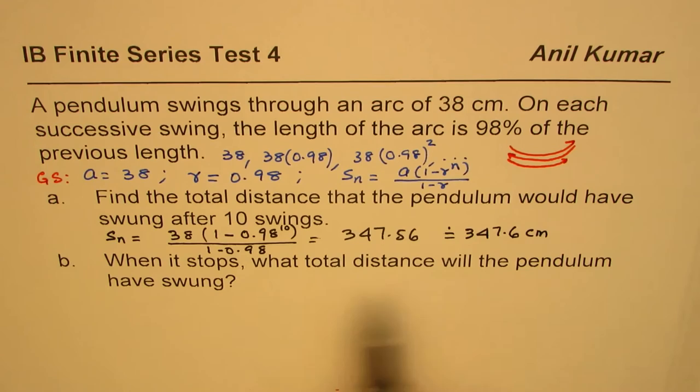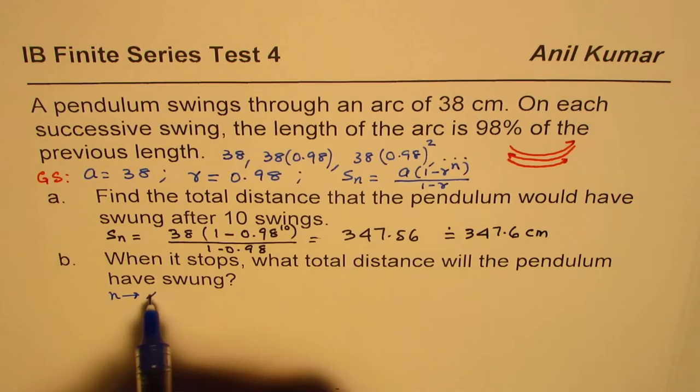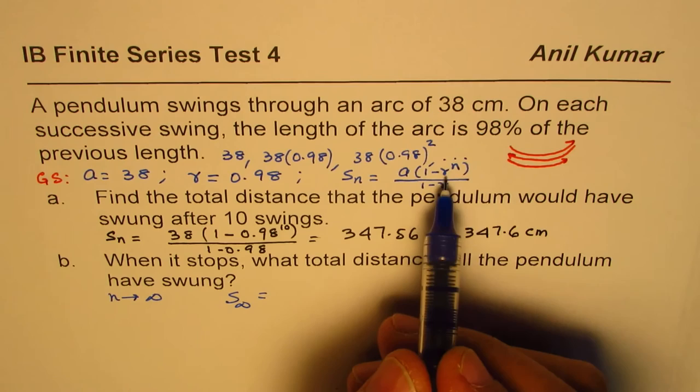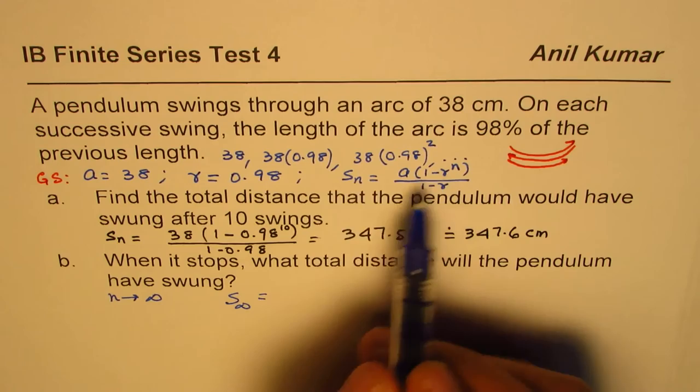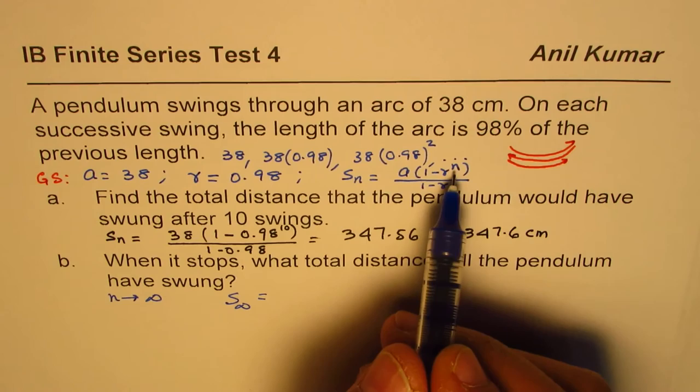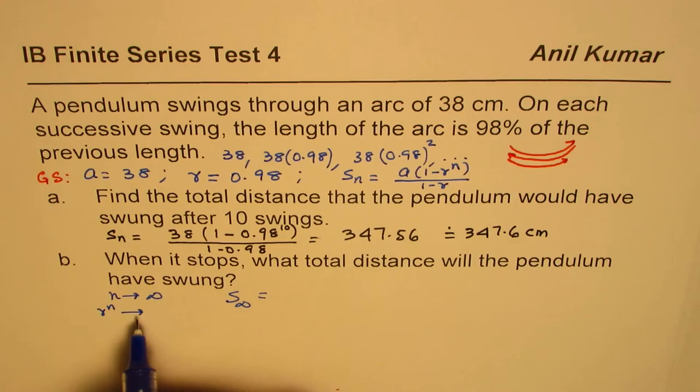Now for the second part, when it stops, what total distance will the pendulum have swung? At that time it will literally never stop, so we'll say n approaches infinity. In that case, the sum will be: this part, r to the power of n, where we know r is less than 1—0.98 to the power of infinity is going to approach 0. So r to the power of n will approach 0.